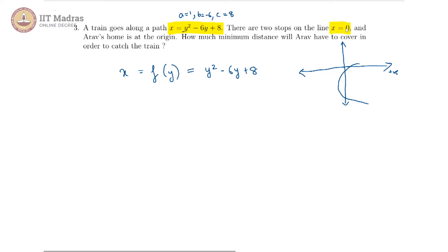They are saying two stops on the line x is equal to 0, that is on the y-axis, and of course these will be this point and this point.